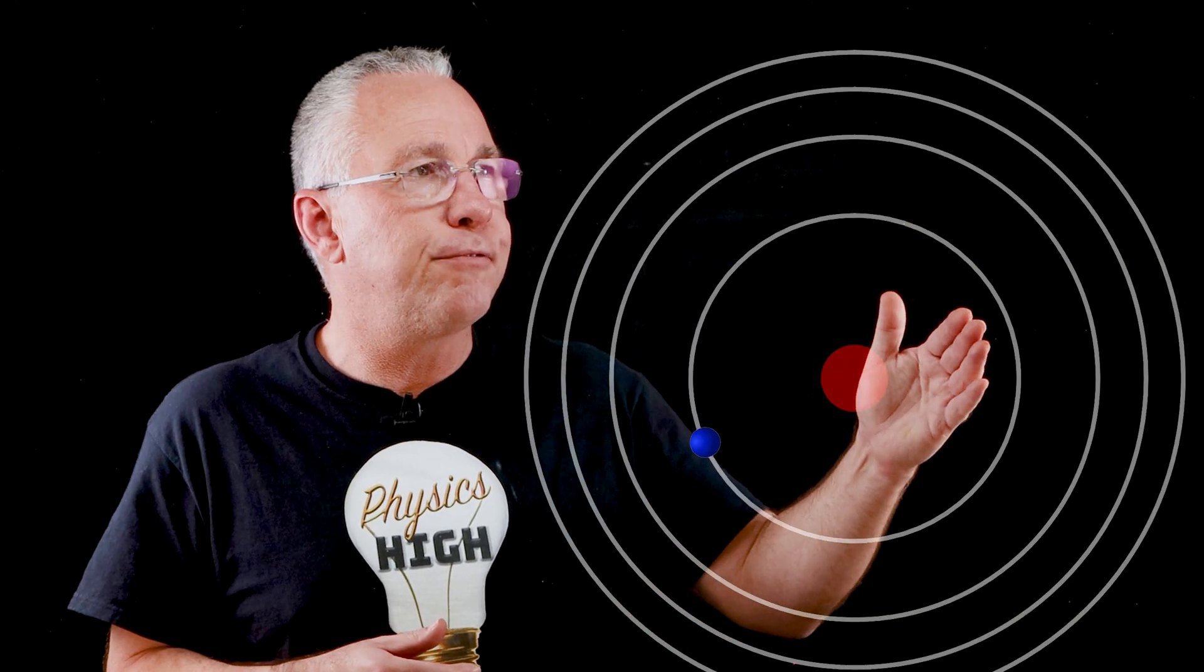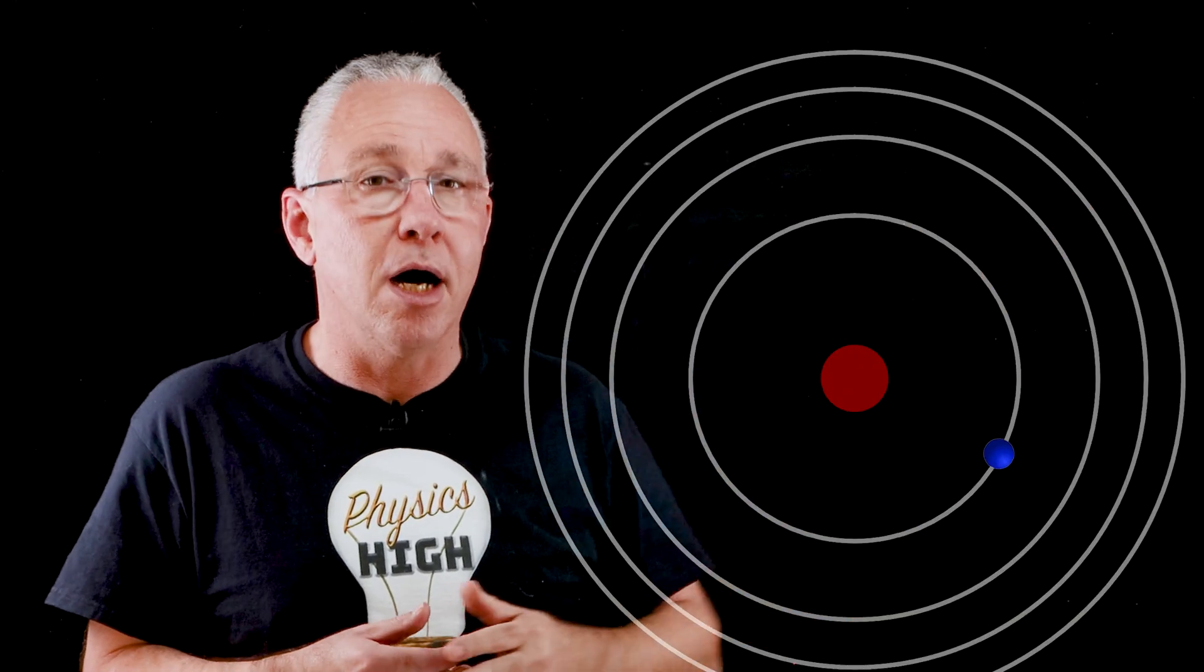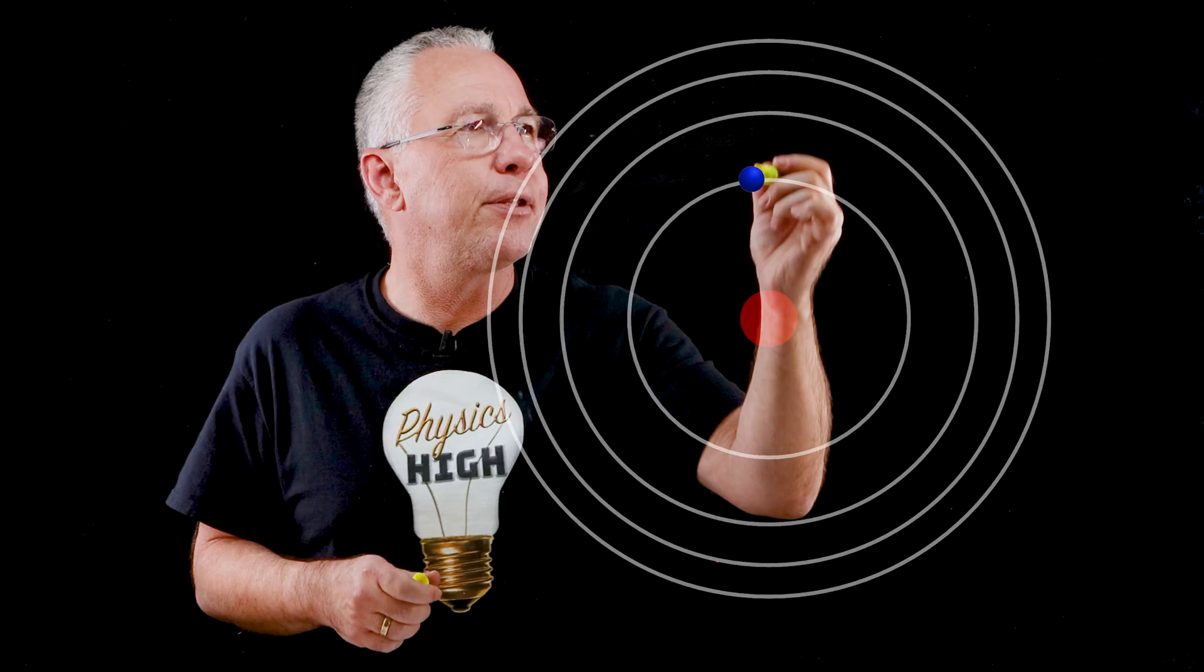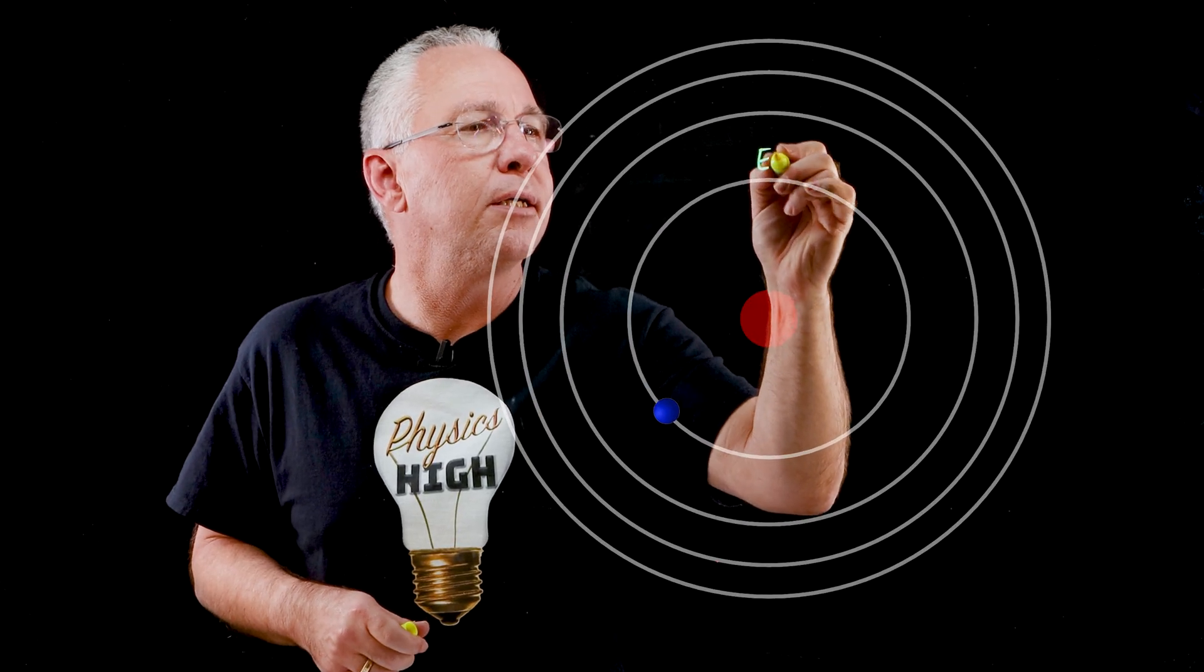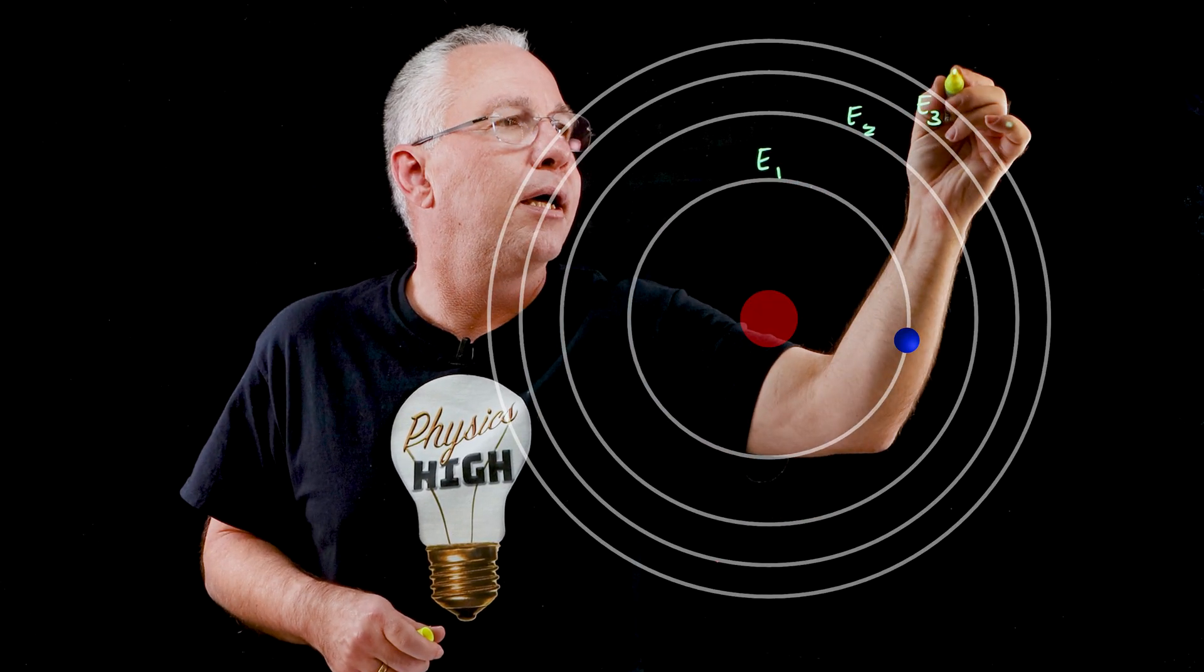The lowest energy is in the first orbit. Further up we have higher energy values. We can label them as energy 1, 2, 3, and 4.